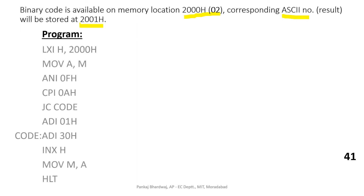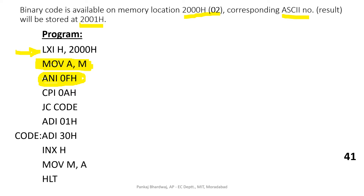The program first loads the number from the HL pair memory location, then moves the number from memory to the accumulator using the command MOV A, M. To check whether the number is less than 0F (no upper nibble), we mask the lower nibble using ANI 0F. We then compare it with 0A. If we get a carry, we skip the next step; if we don't, we proceed.